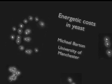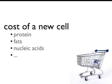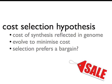Hi, my name is Michael Byron and this is my talk about the role of energetic cost in yeast gene evolution. When producing a new cell, everything in the cell will have a cost and components need to be synthesised to reproduce a cell. Examples of this are production of proteins, fats and nucleic acids. The cost selection hypothesis says that these costs will be reflected in the genome, where there will be a selective advantage in minimising cost because of the savings made in energy.